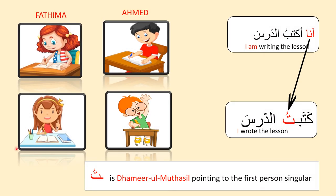See the first example. Ahmad is saying: I am writing the lesson — Ana at-tubu at-darsa. We already learned that ana is the first person detached pronoun. Look at this second sentence — now Ahmad is saying: I wrote the lesson — Katab-tu at-darsa. Here, 'tu' is dhamairul muttasila or attached pronoun. Attached pronouns are always added to the end of the word. Tu is attached with the verb katab, and katab-tu means 'I'.